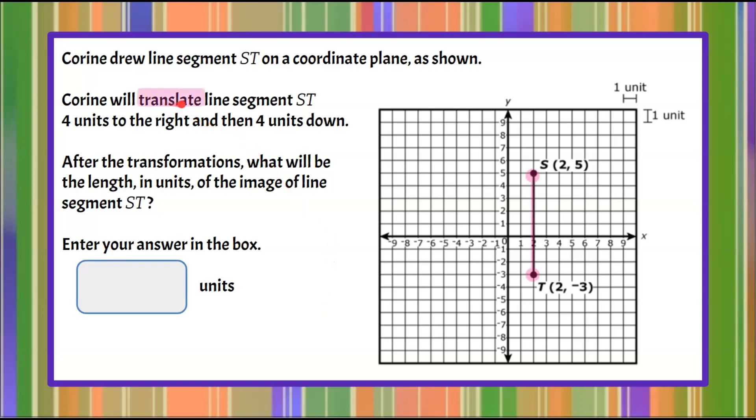We're talking about translating line segment ST. First we're going to translate it four units to the right. So we're going to take all points on this line segment and we're going to go four to the right: one, two, three, four. And we can see one, two, three, four. So parallel line segments.